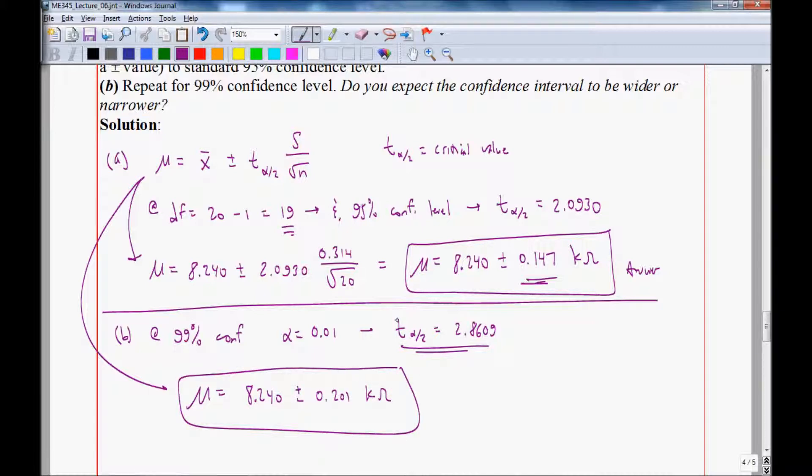And indeed, notice that this confidence interval is wider than it was for 95%. So this is 99%, this one's 95% confidence. It has to be wider in order to be more confident. So we're predicting that our population mean is this value, plus or minus some confidence interval. And in order to be more confident, we need a wider interval. So that makes sense physically.